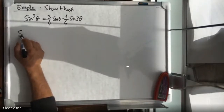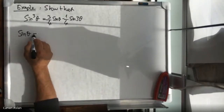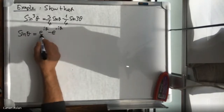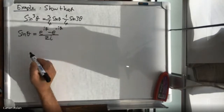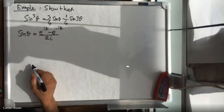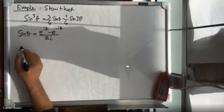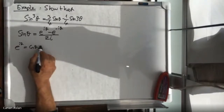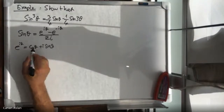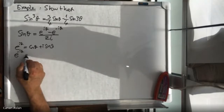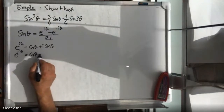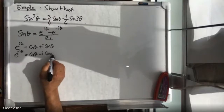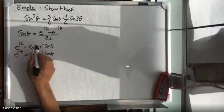Let's remember what sine theta was. Sine theta is e to the i theta minus e to the minus i theta divided by two i. Where did it come from? e to the i theta is cosine theta plus i sine theta, and e to the minus i theta is equal to cosine theta minus i sine theta.